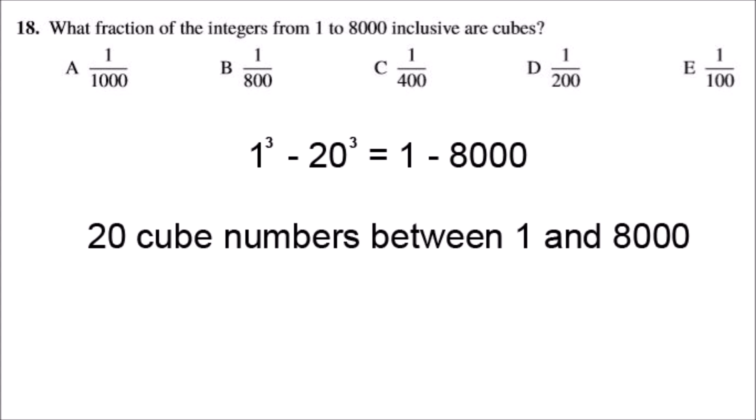So that means that 20 numbers in 8,000 are cubes. And so 20 over 8,000, simplified, is 1 over 400.